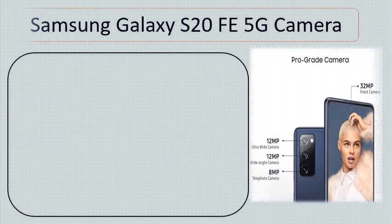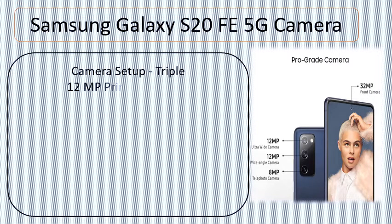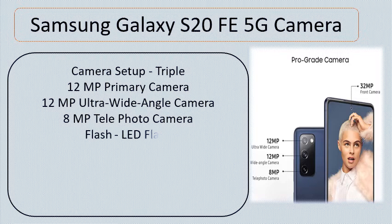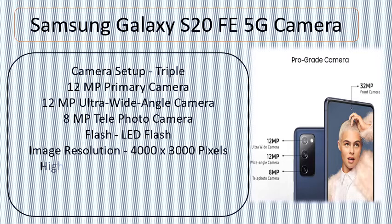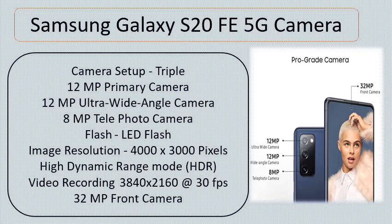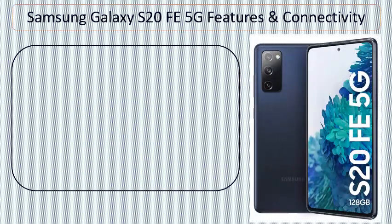Samsung Galaxy S20 FE 5G Camera. Camera Setup: Triple — 12MP Primary Camera, 12MP Ultra Wide Angle Camera, 8MP Telephoto Camera. Flash: LED Flash. Image Resolution: 4000x3000 pixels. High Dynamic Range Mode: HDR. Video Recording: 3840x2160 at 30fps. 32MP Front Camera.